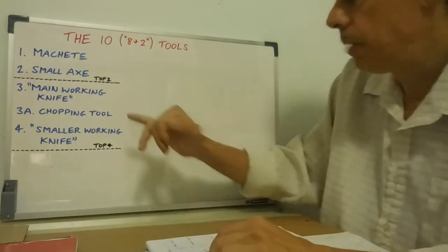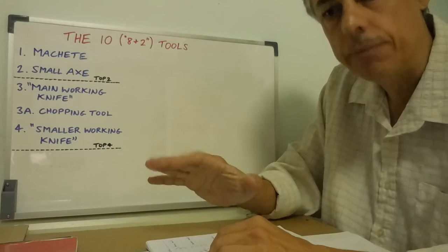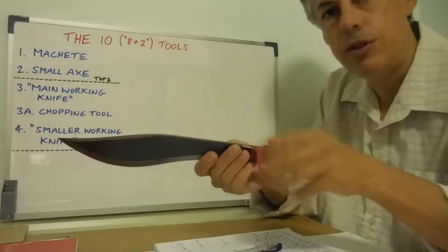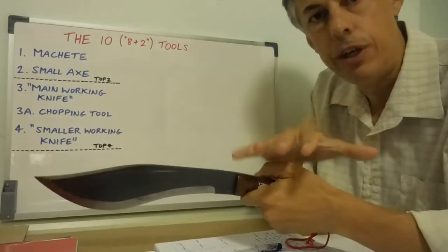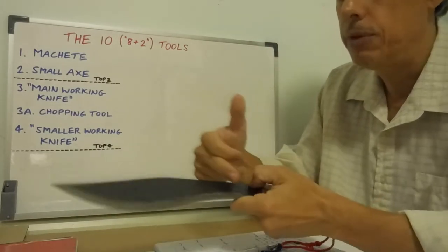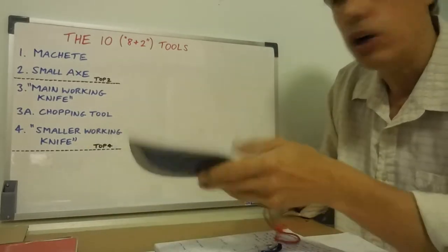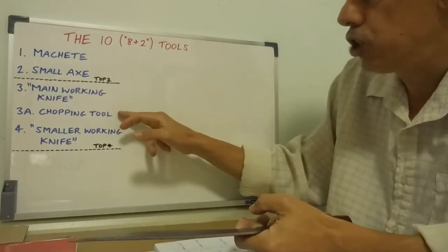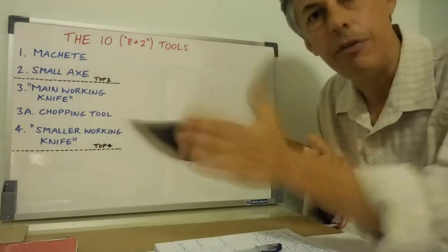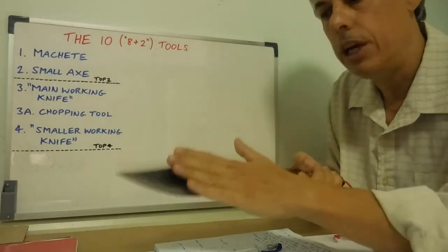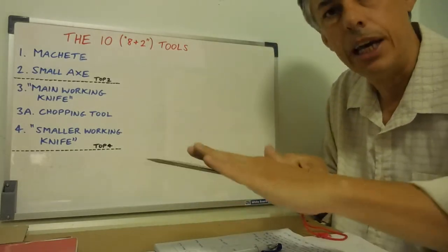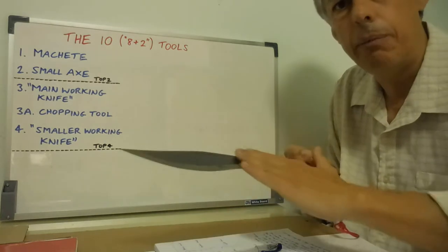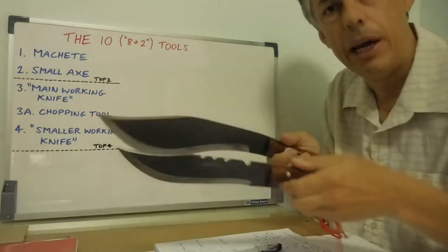Now, the very last point that I want to make is the 3A category. I've talked about this tool as an example in a previous video, a two-part video in this playlist. This happens to be a 9 inch blade, and I call it a chopping tool. Now, when I talk about a 3A chopping tool, I'm not talking about, again, this knife. But I think there are many knives out there of a similar ilk like this.